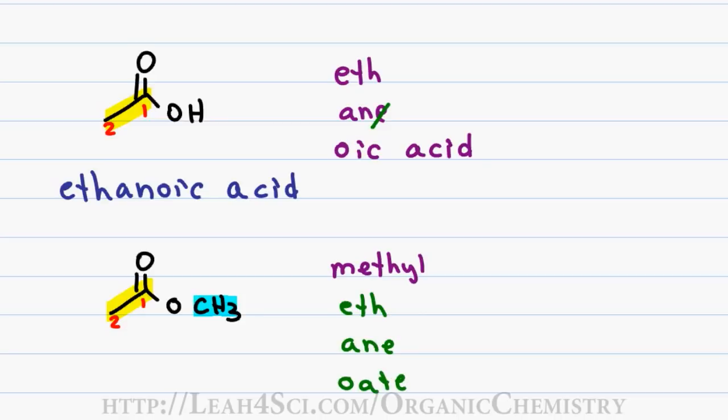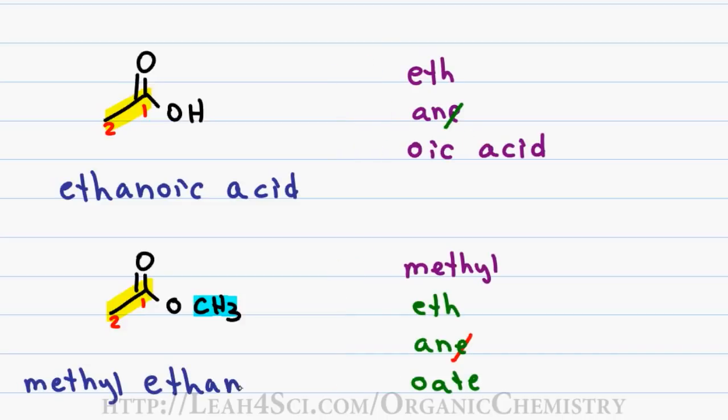Just like in a carboxylic acid, the number 1 is understood and does not have to be included and since O8 starts in a vowel, I drop the E in ANE for a final name of methyl ethanoate. The methyl of the ester is separate from the parent name which is ethanoate.